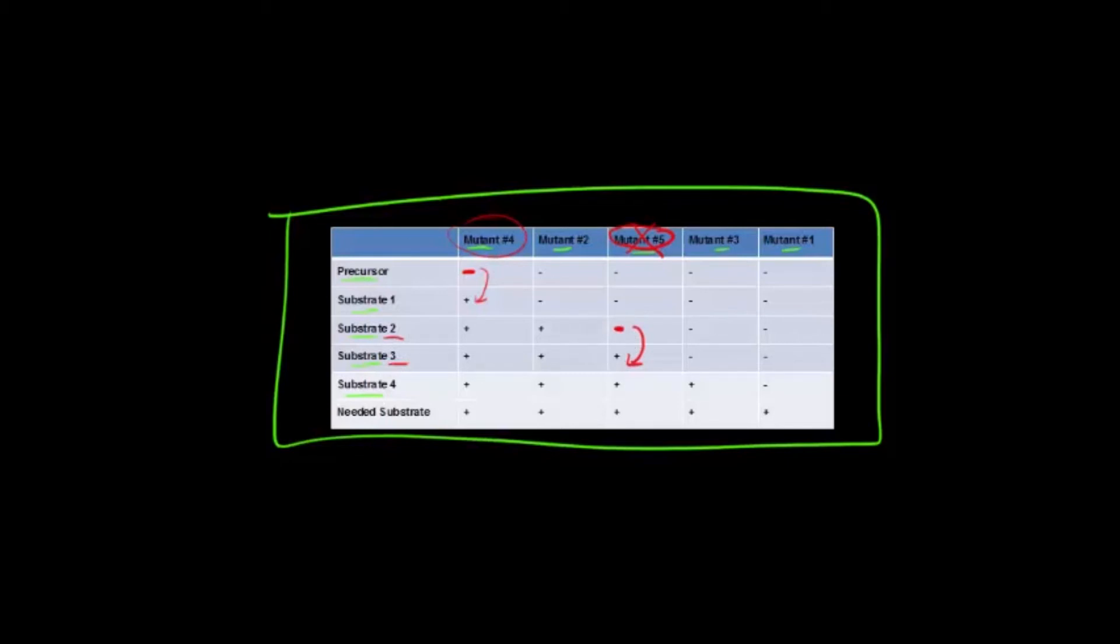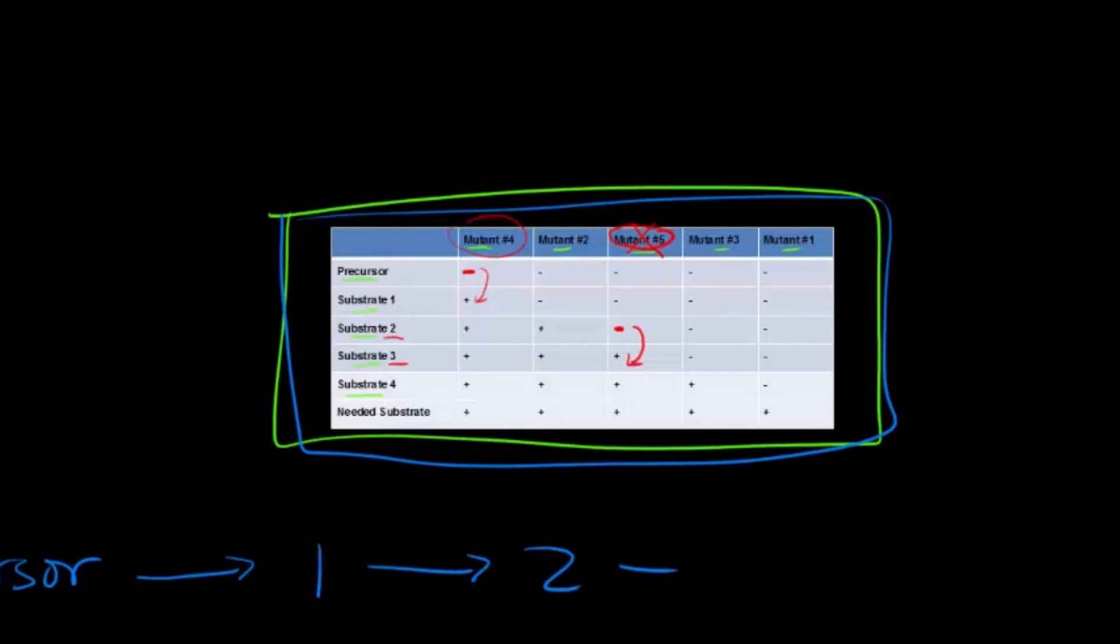So what this shows us is if we take the precursor to begin with, this is the biosynthetic pathway that this box is referring to. We take the precursor molecule, it gets changed to substrate 1, then to 2, then to 3, then to 4, and then the needed substrate.